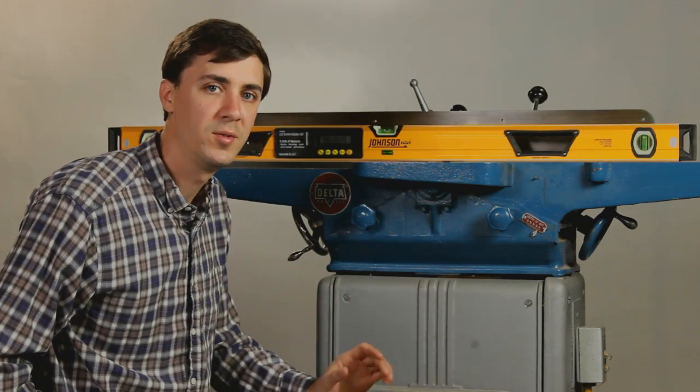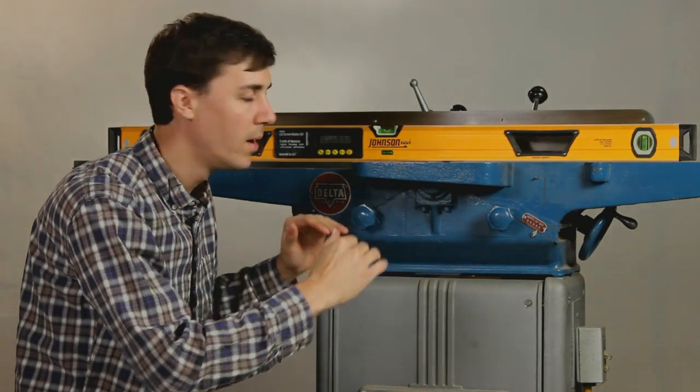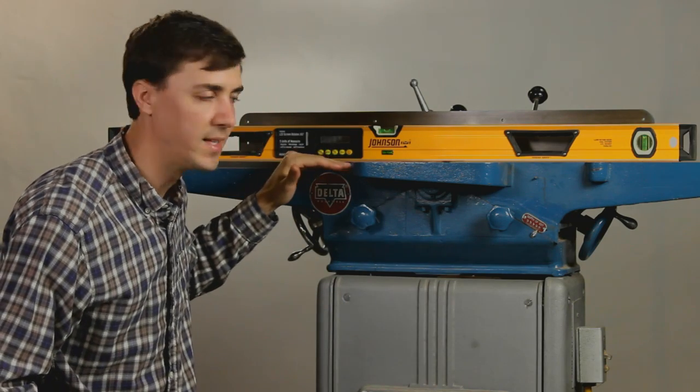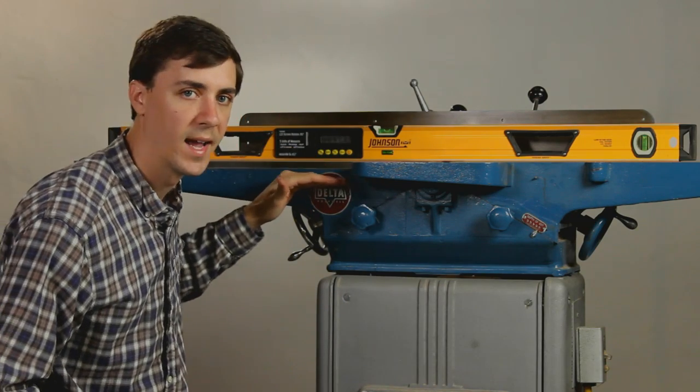At this point, we've got the two tables in line with one another, but we need to check to see if the outfeed table is tipped up or sagging.